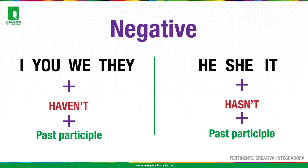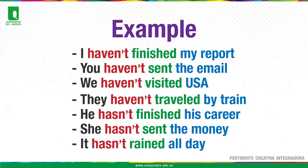Negative form: Subject I, you, we, they plus auxiliary in negative — 'haven't' — plus past participle. Third person he, she, it plus auxiliary has in negative — 'hasn't' — plus past participle. Example: I haven't finished my report.